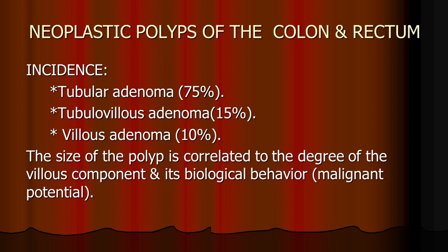The neoplastic polyps — adenomas — come in three types. The tubular adenoma is most common, followed by tubular villous adenoma, and the rarest and most serious is the villous adenoma. Importantly, the size of the polyp correlates with the degree of the villous component: smaller polyps are usually tubular adenomas, but as the polyp grows beyond one to two centimeters, the villous component increases and so does the malignant potential.